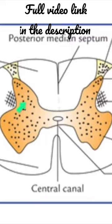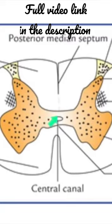In the cross section of the spinal cord, the gray matter is seen as an H-shaped or butterfly shaped column extending throughout the length of the spinal cord. It is divided into symmetrical right and left comma-shaped masses, which are connected across the midline by the transverse gray commissure.